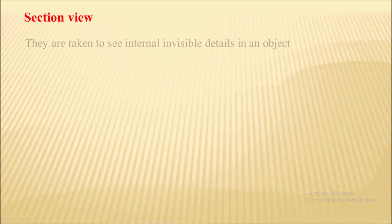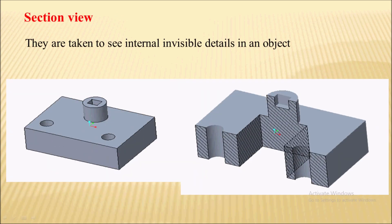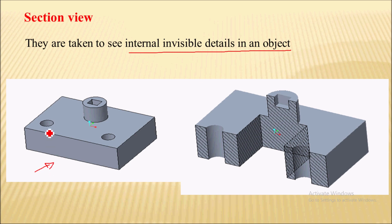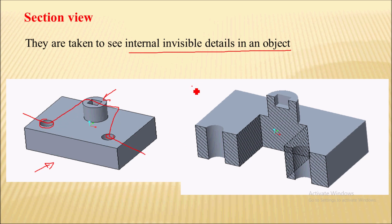The next type of view is the section view. Section views are taken to see the internal invisible details in an object. Here you can see a 3D object — if I look from this side I am unable to know that there are holes and a circular pocket inside the cylindrical portion. But if I cut the object with an offset plane, I will get the internal details.